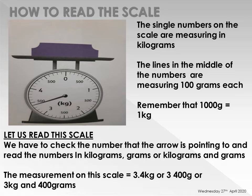Here we are going to see how we can read the measurements on a scale. This scale has an object on it and we want to see what the measurement is. If you look at the scale you can see some numbers and some lines. The single numbers on the scale - one, two, three, and four - are measuring in kilograms. So one equals one kilogram, two equals two kilograms, three equals three kilograms, and four equals four kilograms.